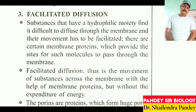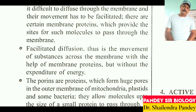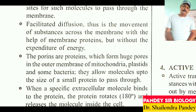Porins are proteins that form large pores in the outer membranes of mitochondria, plastids, and some bacteria, allowing molecules up to the size of a small protein to pass through. When a specific extracellular molecule binds to the protein, the protein rotates 180 degrees and releases the molecule inside the cell. Water channels are made up of eight different types of aquaporins.